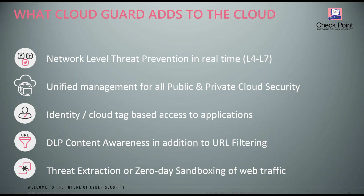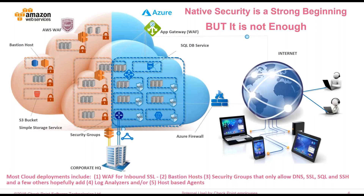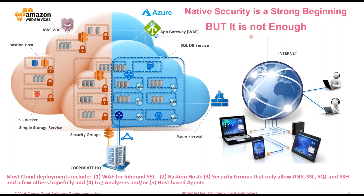Esto es un diagrama típico de una nube bajo la convención de los elementos que se manejan en los diferentes Cloud Security Providers. Tenemos de entrada varios elementos. El WAF va a ser una protección que en muchos casos puede proveer el mismo vendor de nube —Amazon o Azure— pero es muy limitado en el sentido de que solamente protege el puerto 443/8443, es decir, aplicaciones web. Cualquier otra aplicación que montemos en la nube, un WAF ya no nos va a servir.